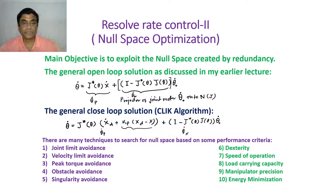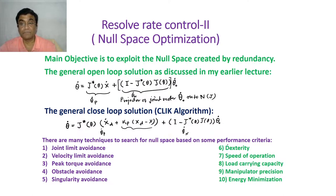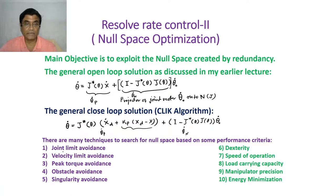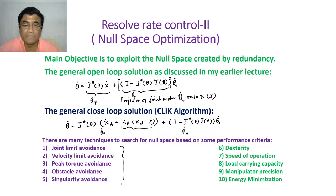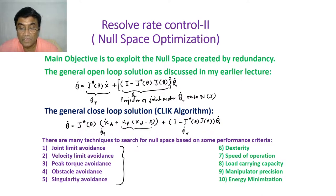There are many techniques for null space utilization based on performance criteria, allowing us to extract a null-space optimized solution. For example: joint limit avoidance, velocity limit avoidance, peak torque avoidance, obstacle avoidance, and singularity avoidance. These are all called constraint-based criteria.